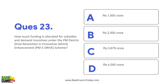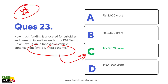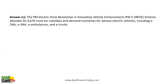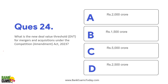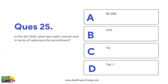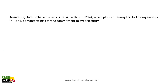How much funding is allocated for subsidies and demand incentives under the PM Electric Drive Revolution in Innovative Vehicle Enhancement (PM E-Drive) Scheme? It is 3679 crore rupees. What is the new deal value threshold for mergers and acquisitions under the Competition Amendment Act 2023? It is 2000 crore rupees. In GCI 2024, what was India's overall rank in terms of cybersecurity commitment? India's score is 98.49.